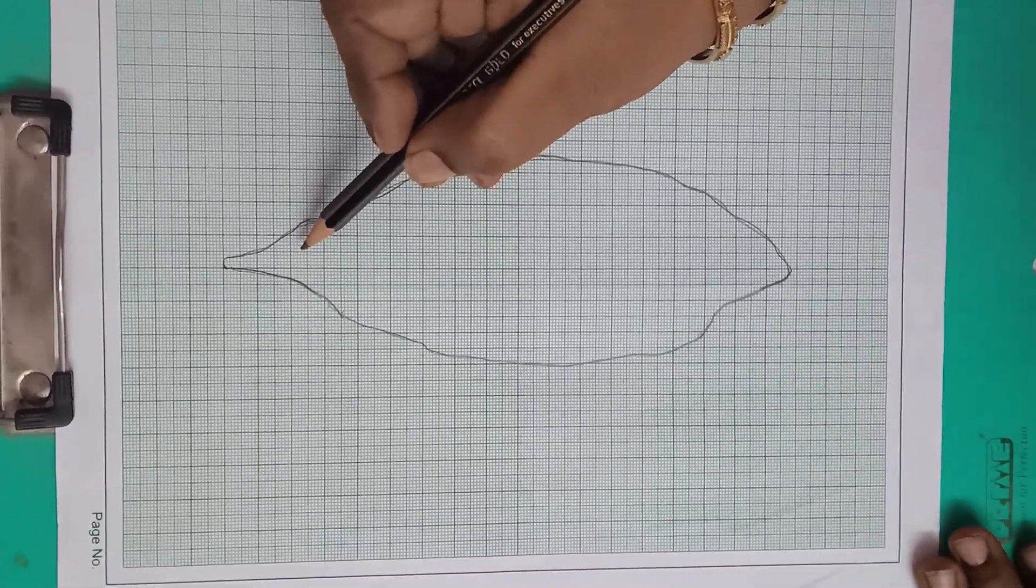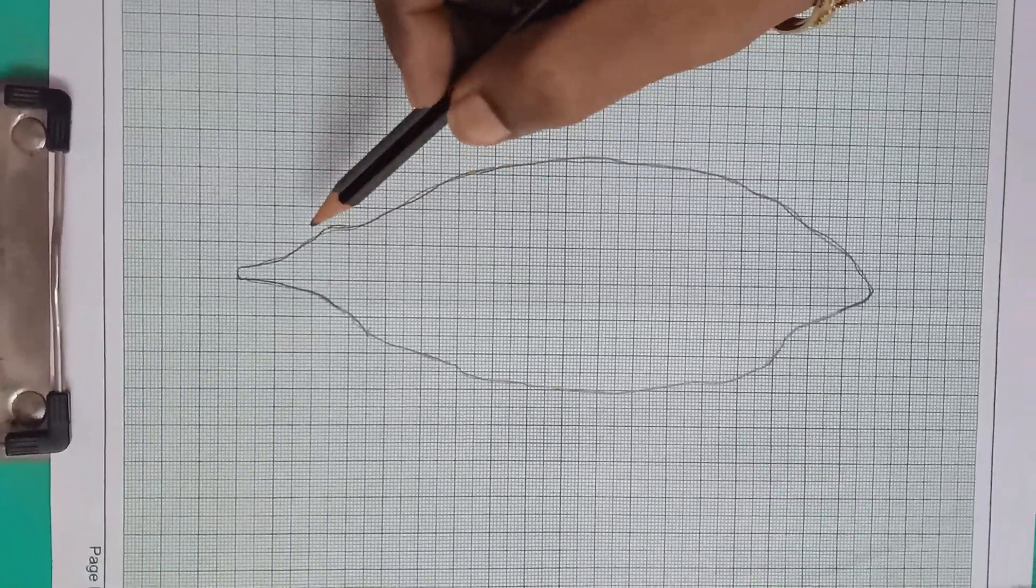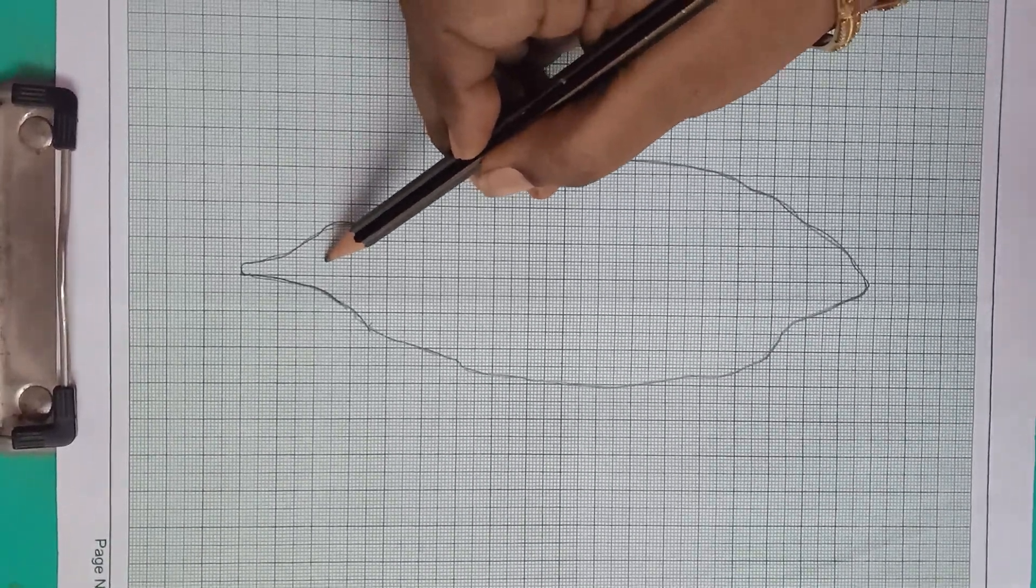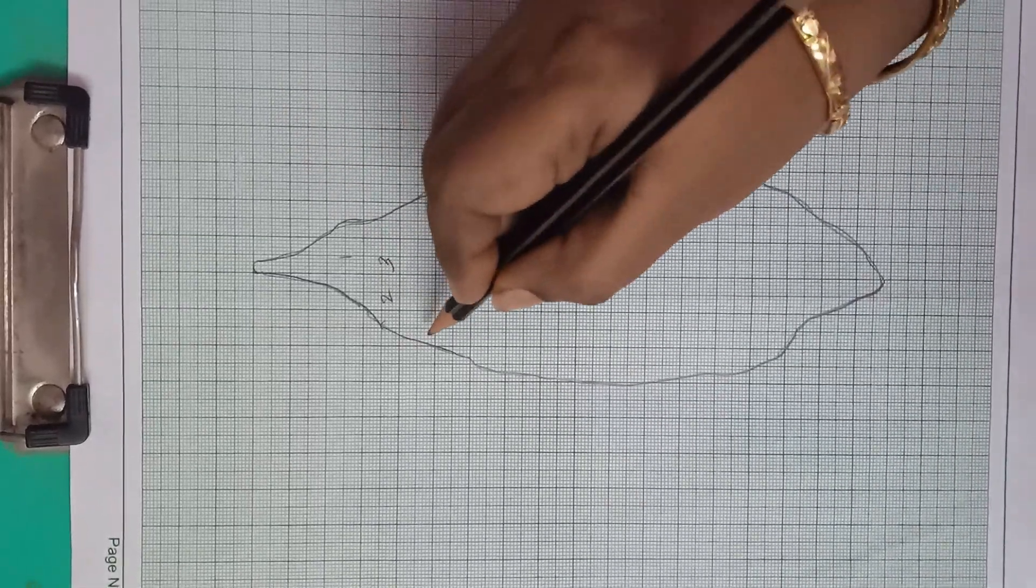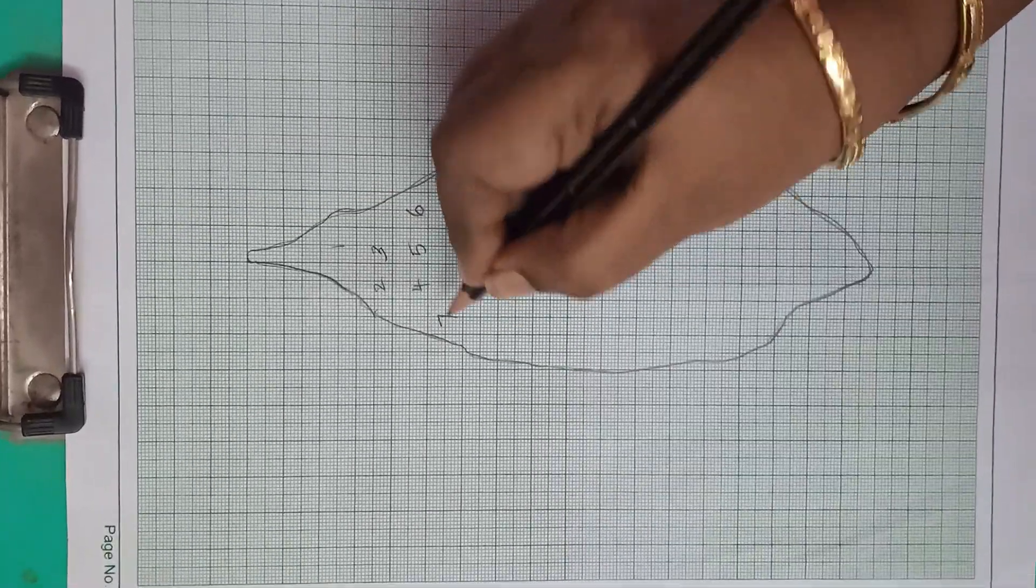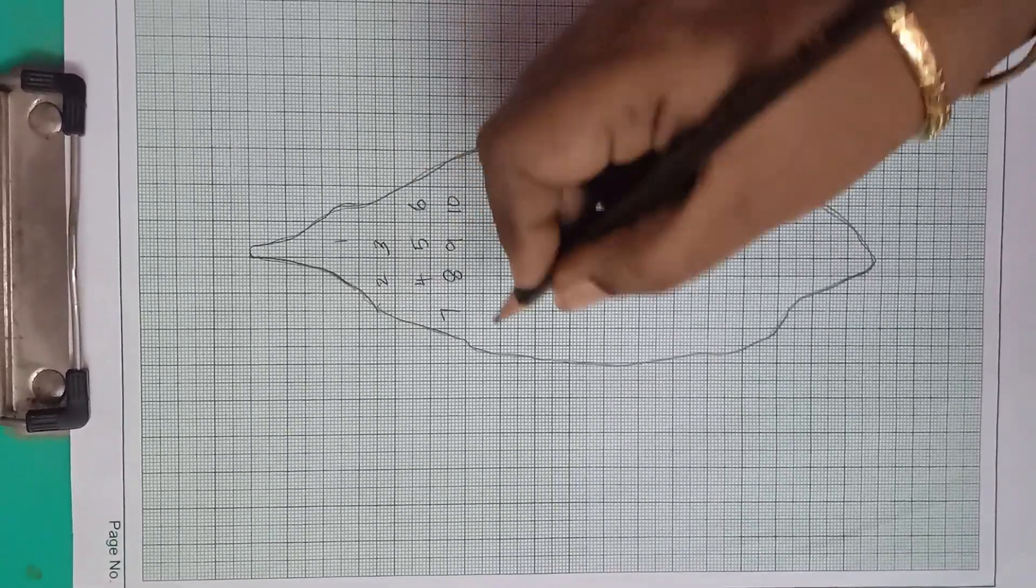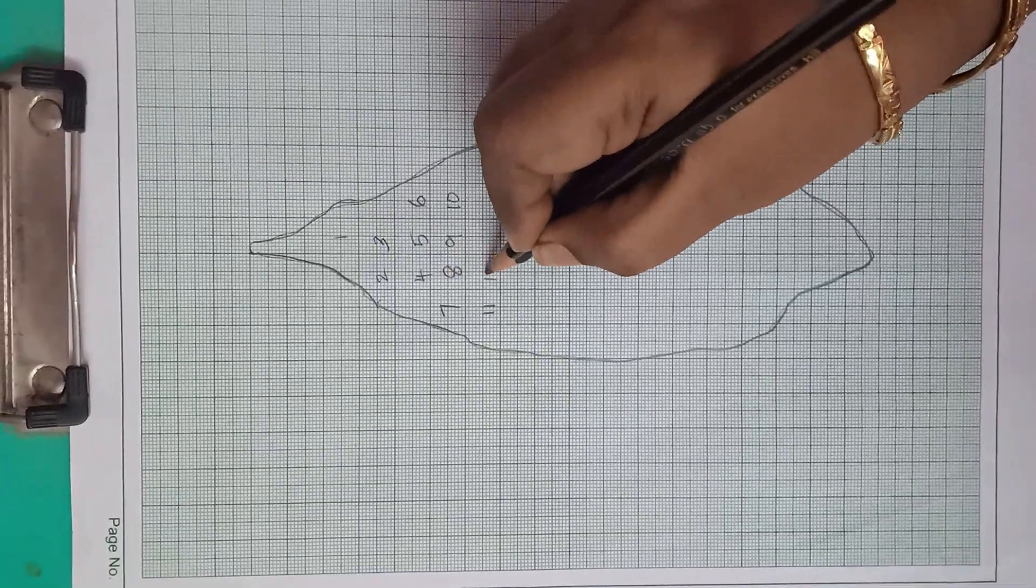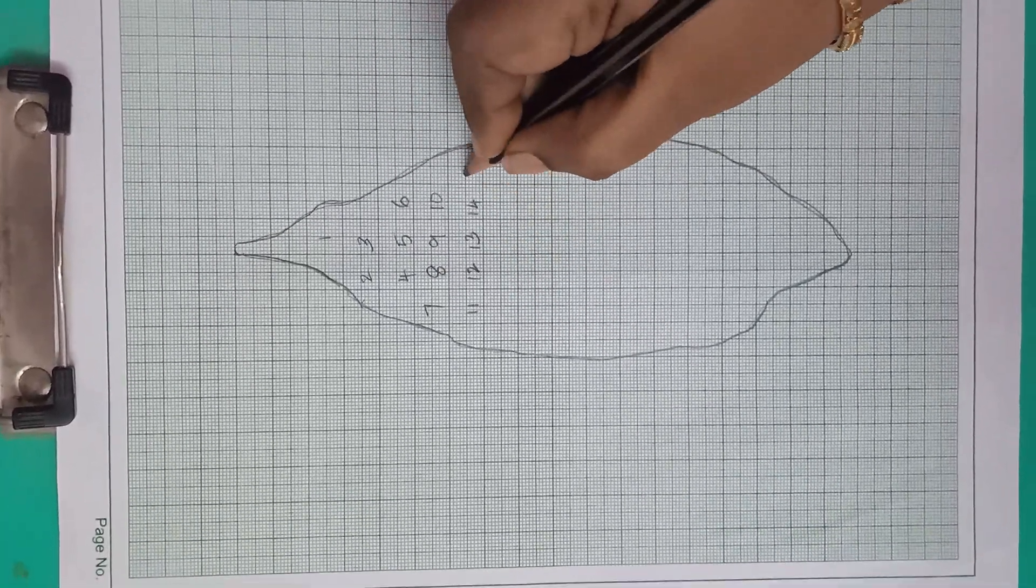Then, we are going to count the number of squares. First, start counting with whole squares. 1, 2, 3, 4, 5, 6, 7, 8, 9, 10, 11, 12, 13, 14, 15.